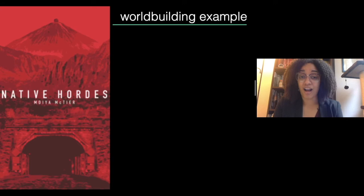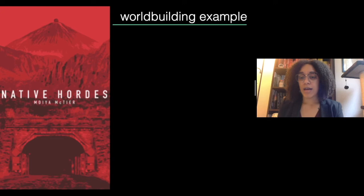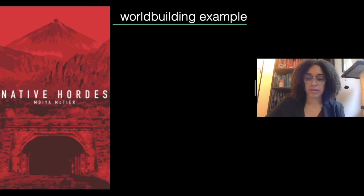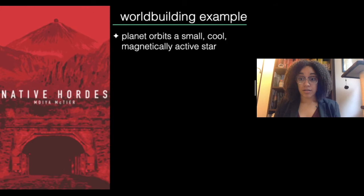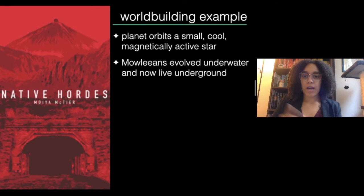My first big worldbuilding project was writing a science fiction novel in college, set on a planet I had studied. That was an interesting exercise because I was constrained in some ways — I had the physical characteristics of the planet and didn't want to stray from them, but I also wanted everything I made up to build off those real characteristics. The real characteristics were that it was a relatively small planet, just a little smaller than Earth, but orbited a star much smaller than our sun — that star was cool, with lower temperature and much higher magnetic activity, so there were a lot of flares coming off of it.